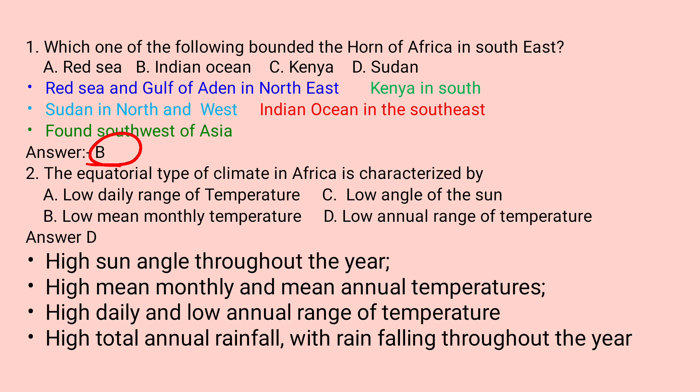Question number two: The equatorial type of climate in Africa is characterized by — A. Low daily range of temperature. B. Low mean monthly temperature. C. Low angle of the sun. D. Low annual range of temperature.